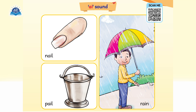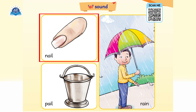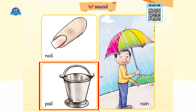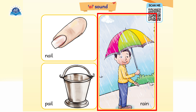Assalamu alaikum kids. Look at the pictures carefully and try to name these pictures. You can see a nail, you can see a pail, and you can see rain.